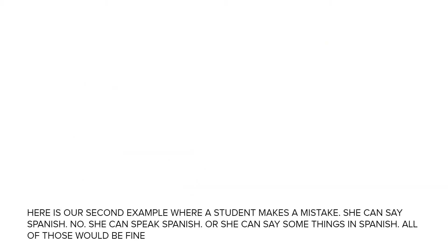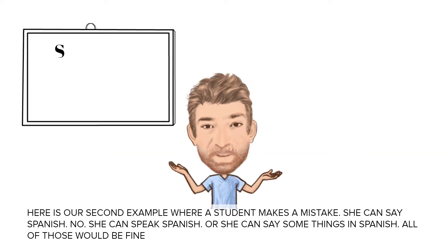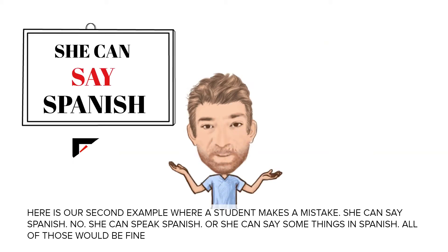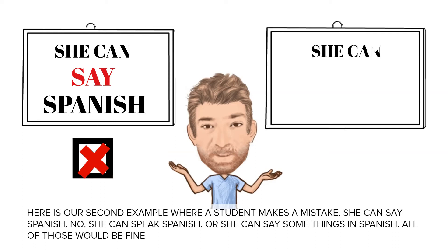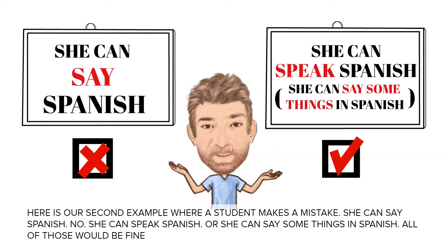Here's our second example where a student makes a mistake. She can say Spanish. No — she can speak Spanish, or she can say some things in Spanish. All of those would be fine.